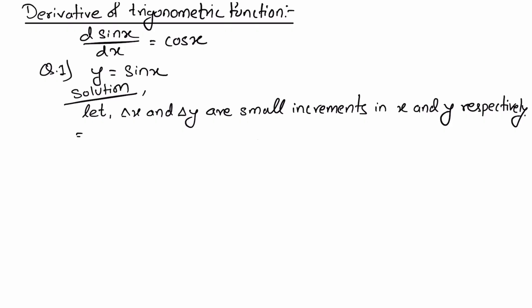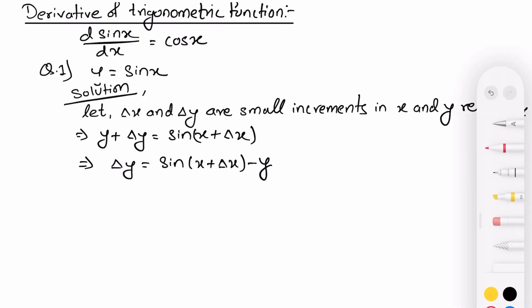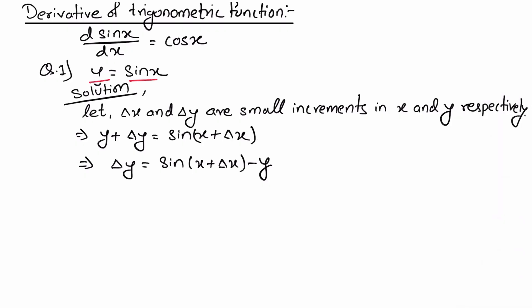So we will have y plus delta y equals sin(x plus delta x). Next we write delta y equals sin(x plus delta x) minus y, and since y equals sin x, we can write delta y equals sin(x plus delta x) minus sin x.